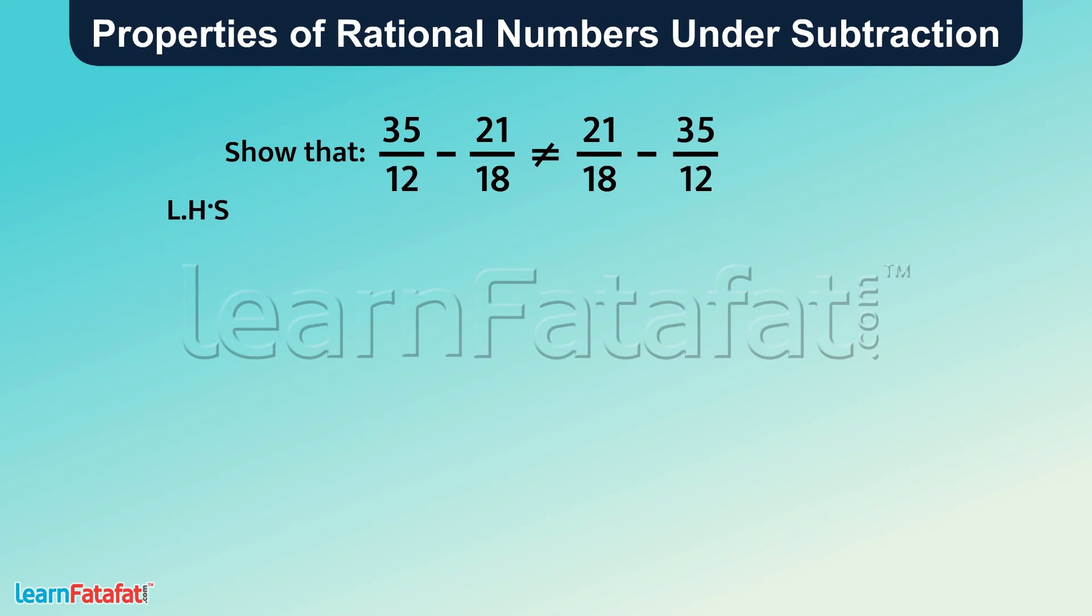Let's solve the left-hand side first. 35 by 12 minus 21 by 18. First, convert subtraction to addition by adding the opposite of 21 by 18: 35 by 12 plus minus 21 by 18.